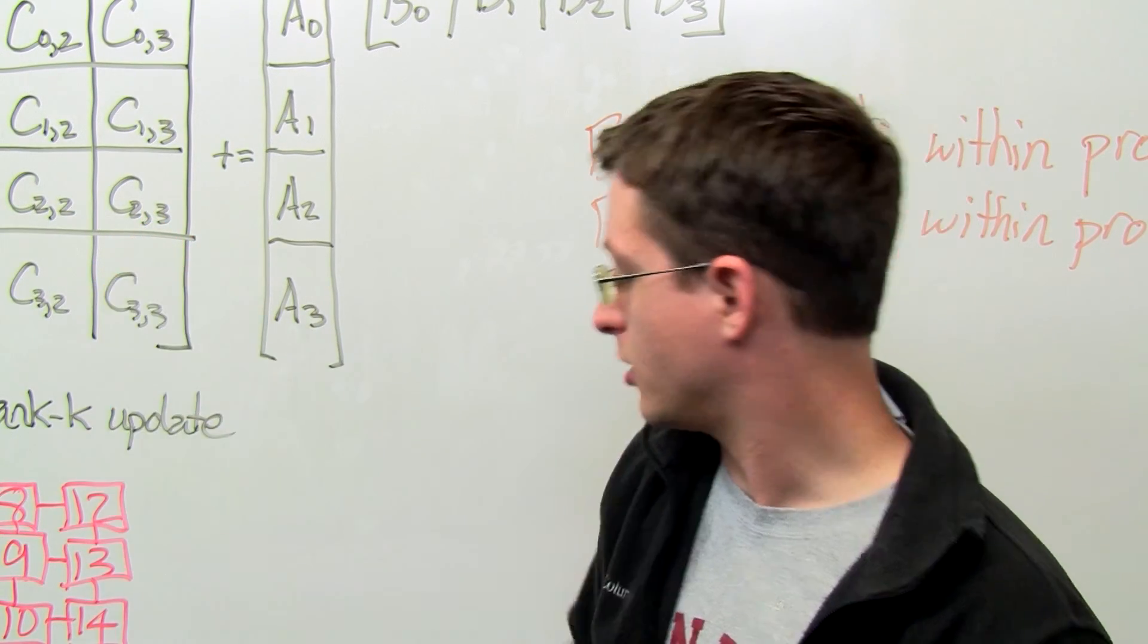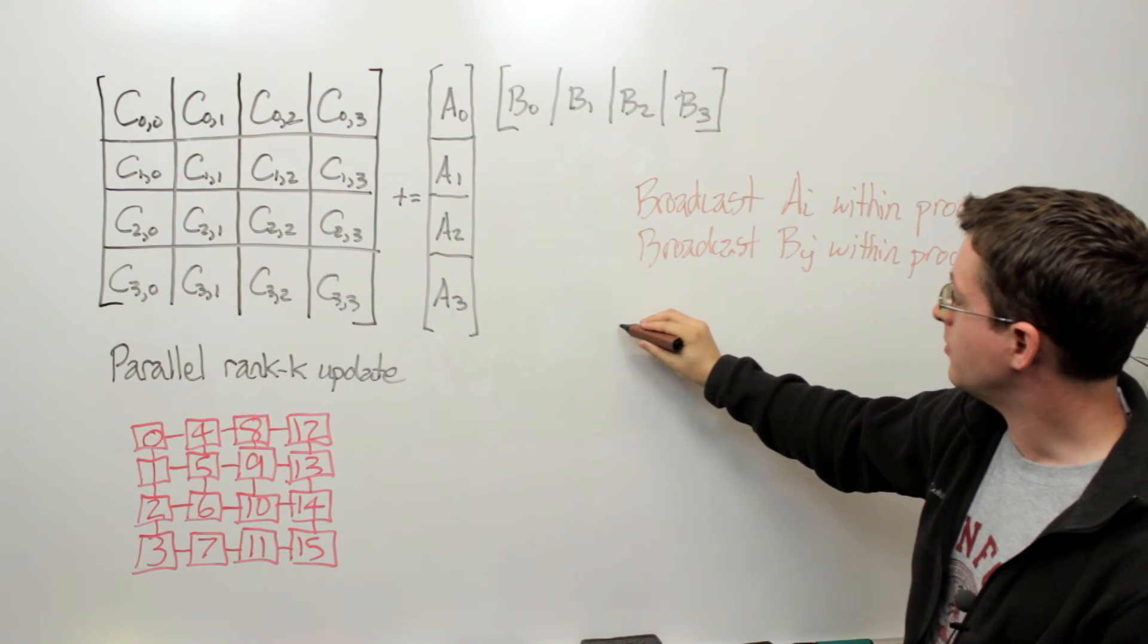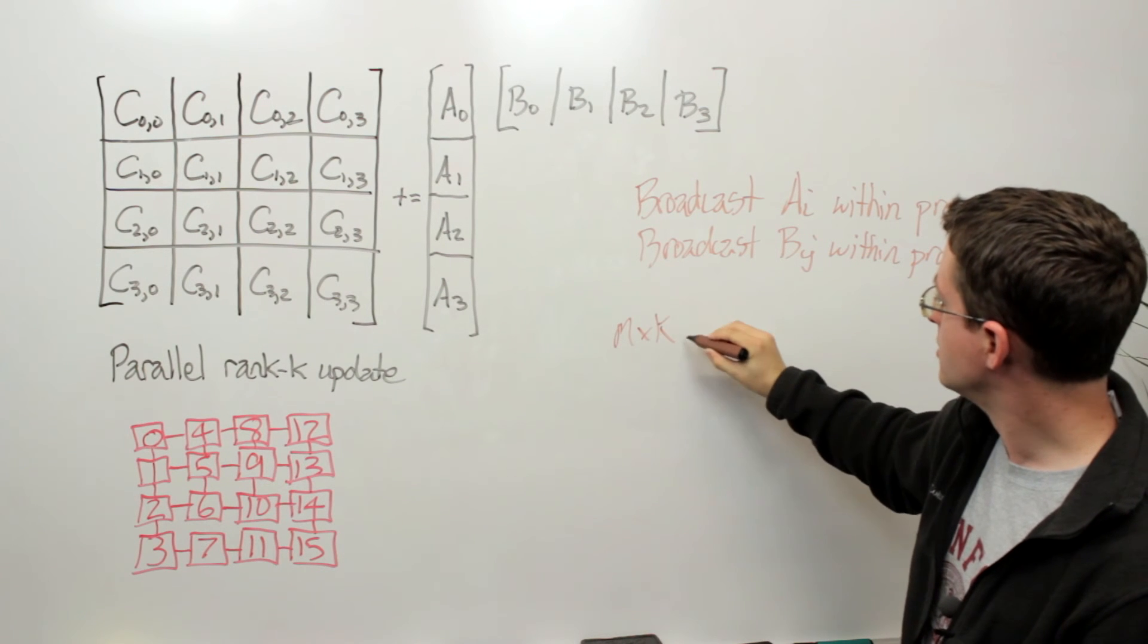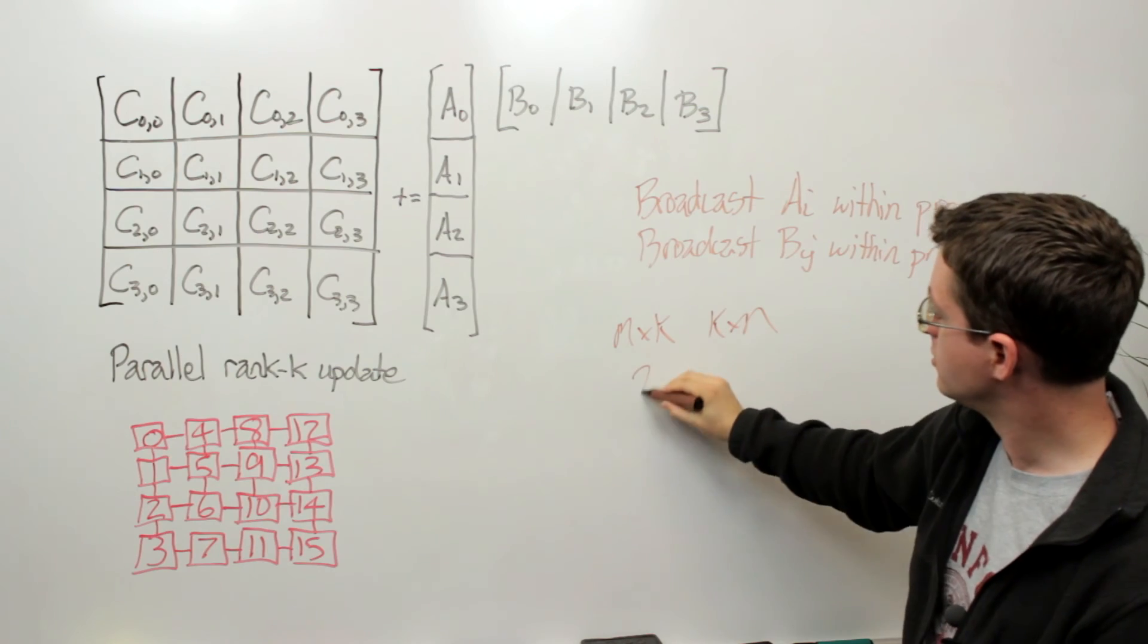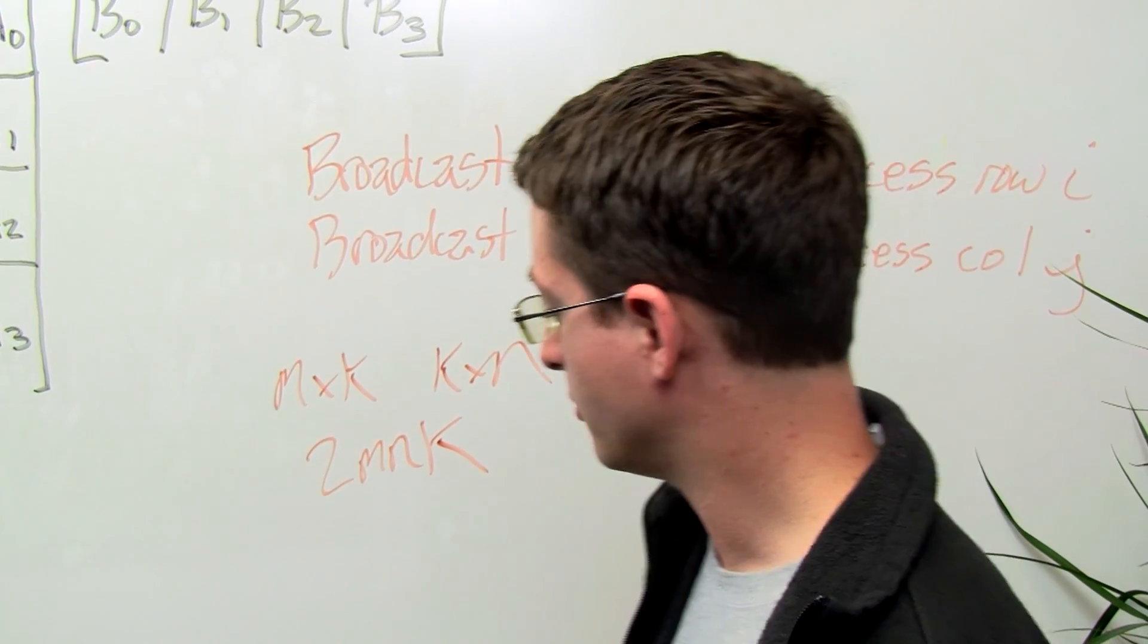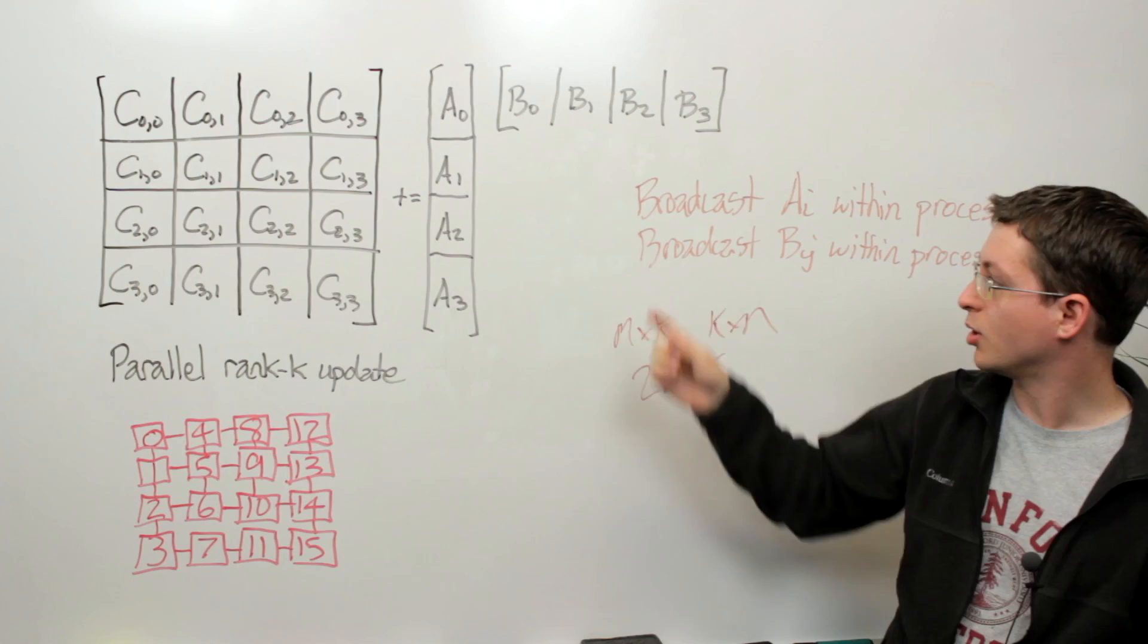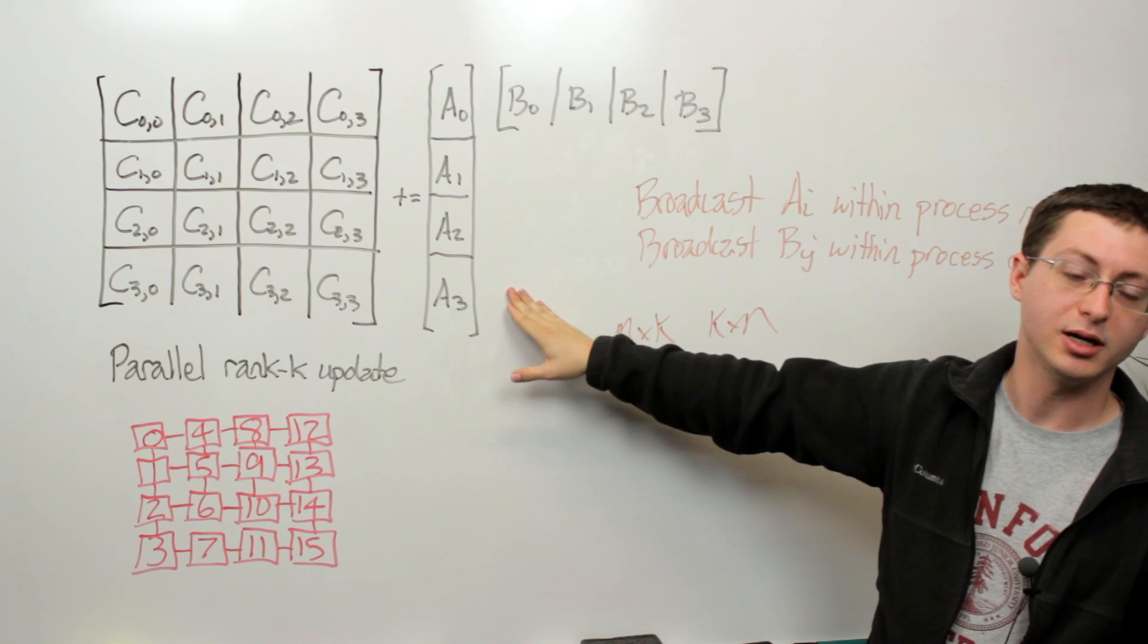And then likewise for you to recall that the cost of performing a matrix-matrix multiplication of an M by K matrix against a K by N matrix has cost 2MNK. So it would be useful for you to go through and actually work out what the cost is for both the broadcast and then the local computation of A sub i multiplied by B sub j. Thanks.